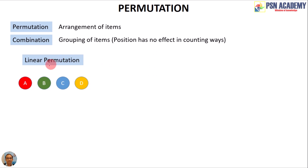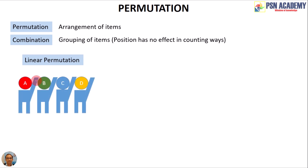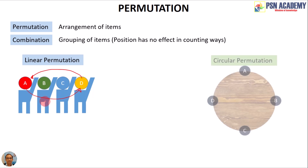We have linear permutation as one type, where items are arranged in a linear fashion. Suppose items A, B, C, and D are sitting on chairs: A is in front of B, B in front of C, and C in front of D. When D comes to the first chair and A goes to the last chair, that is a different arrangement.